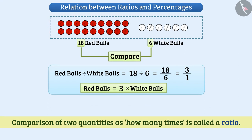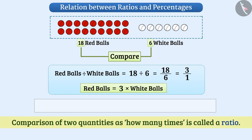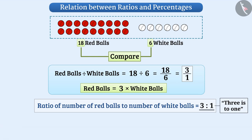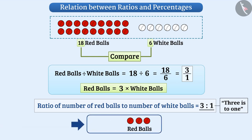In this way, we can say that the ratio of number of red balls to number of white balls is equal to 3 is to 1, which means there are 3 red balls compared to 1 white ball.